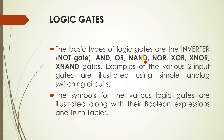The basic types of logic gates are: the NOT gate, AND gate, OR gate, NAND gate, NOR gate, XOR gate, XNOR gate, and examples of various two-input gates are illustrated using a simple analog switching circuit. The symbol for the various logic gates are illustrated along with the Boolean expression and the truth table. We need the truth table to evaluate what the output would be for two particular inputs using the different gates.